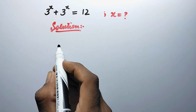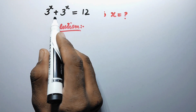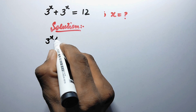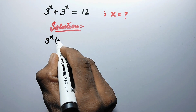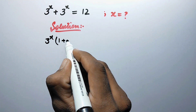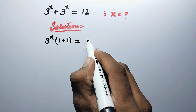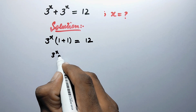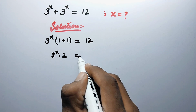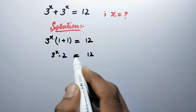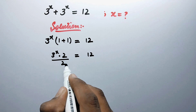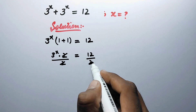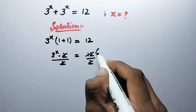In the first step, as we can see that both values on the left hand side are the same, so we will take 3 to the power x as common. Therefore it will be 3 to the power x times (1 plus 1) equal to 12, which gives 3 to the power x times 2 equal to 12. Now to eliminate this 2 we will divide both sides by 2, so this 2 cancels and 12 divided by 2 is equal to 6.